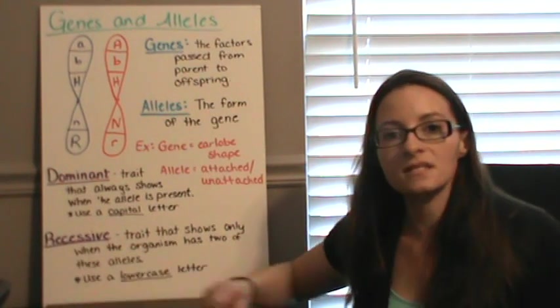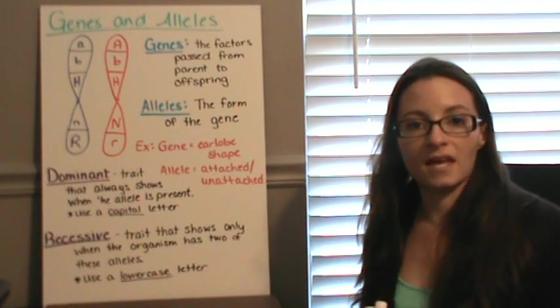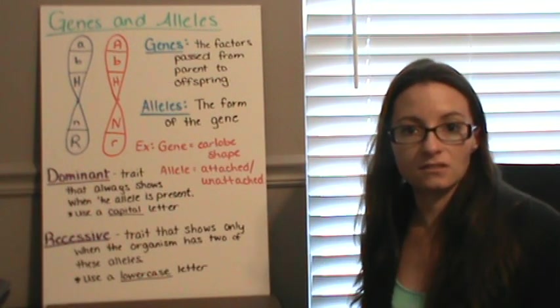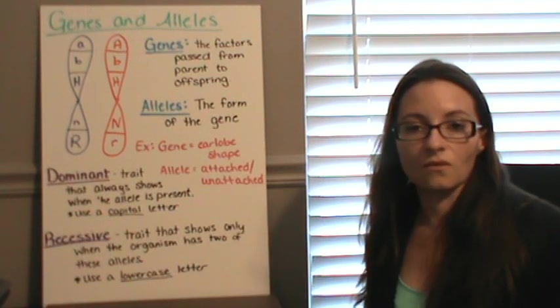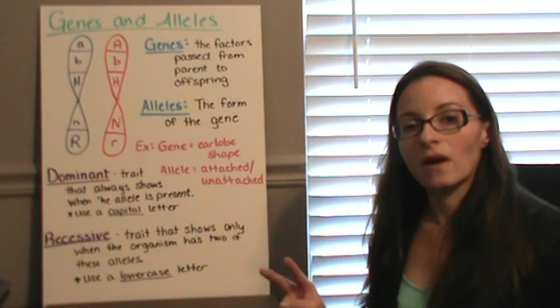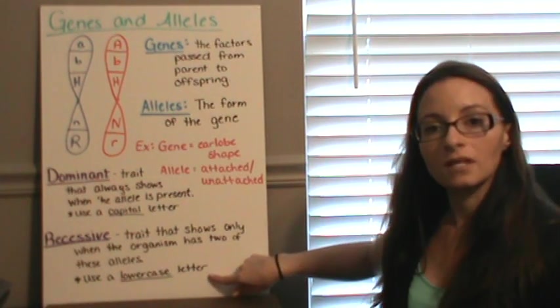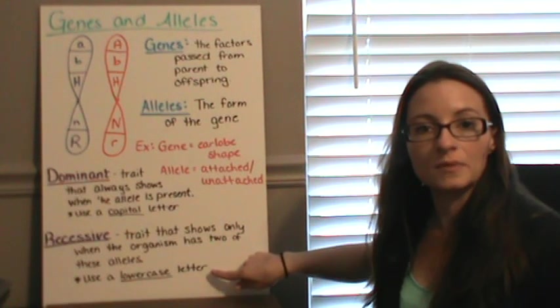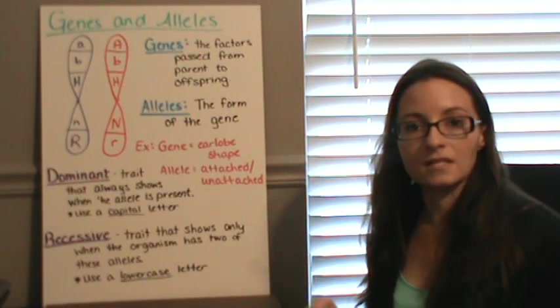A recessive allele is one that's only going to be shown if you have two recessive alleles. If you have a dominant and a recessive allele, that dominant allele is going to be shown. So only if you have two recessive alleles are you actually going to see the recessive trait. So we use a lower case letter to represent recessive. So you would have two lower case letters if you had recessive traits.